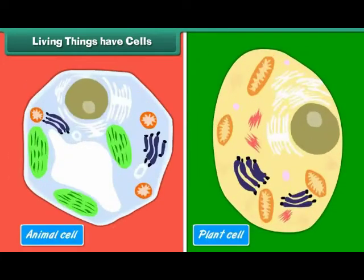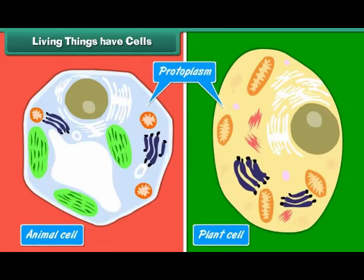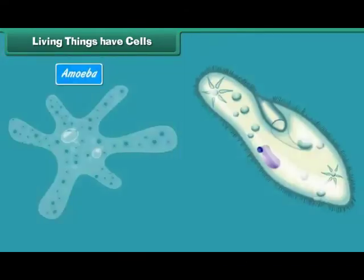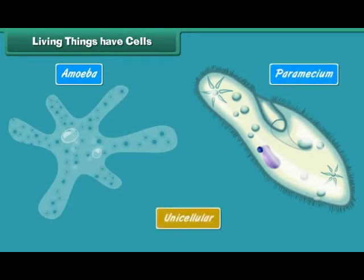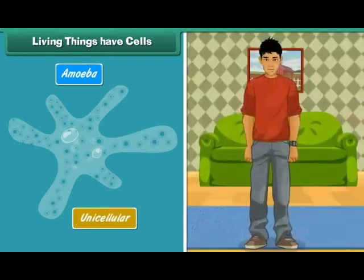Cells are considered to be the structural and functional unit of life. The cells are made of protoplasm, or living matter. All the body functions and properties of life are due to protoplasm. Some living organisms like amoeba and paramecium are made up of one cell only; they are called unicellular. Organisms made up of many cells are called multicellular.